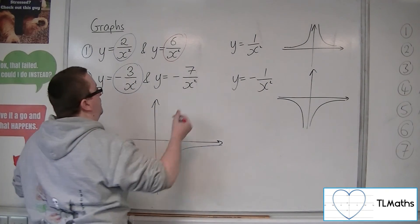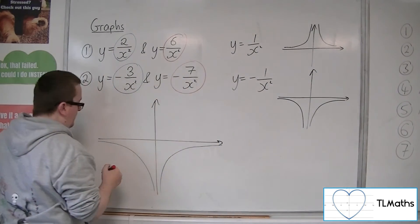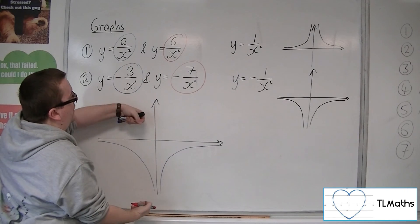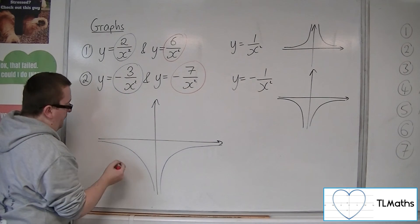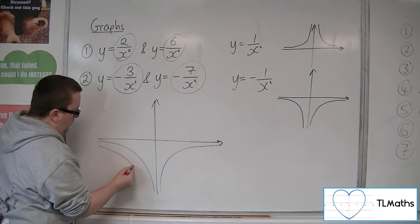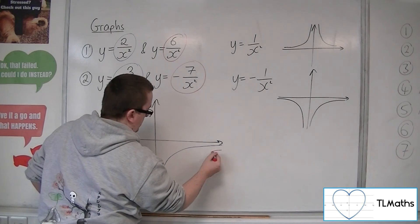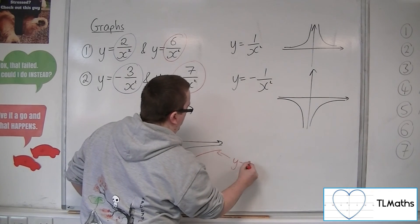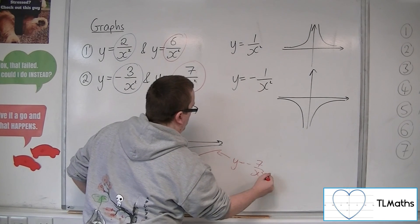And y equals minus 7 over x squared, because it's being stretched further than this first graph, will appear something like this. So there is y equals minus 7 over x squared.